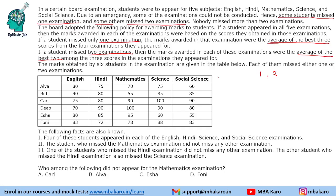For example, if there are five exams A, B, C, D, E and you miss B and D, they will consider the best two out of A, C, E. The marks obtained by six students in the examination are given in the table. Each of them missed either one or two examinations. Four of the students appeared in each of English, Hindi, Science, and Social Science.